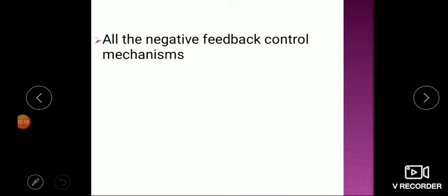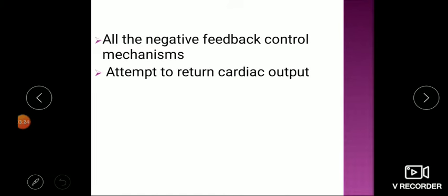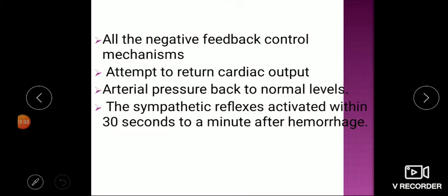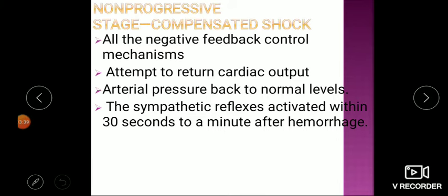Once there is inadequate tissue perfusion, negative feedback control mechanisms activate to rescue the body, attempting to return cardiac output and arterial blood pressure to normal. The sympathetic reflex is activated within 30 seconds to a minute after hemorrhage. These are called compensatory mechanisms or compensated shock — the body tries to maintain perfusion by increasing cardiac output and blood pressure.